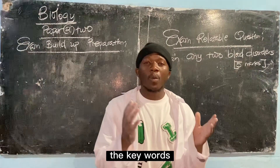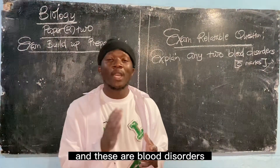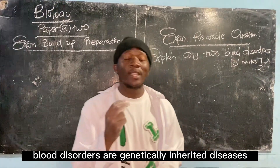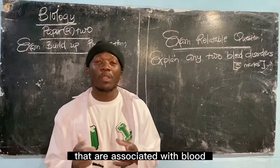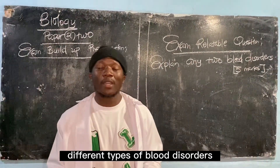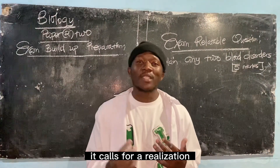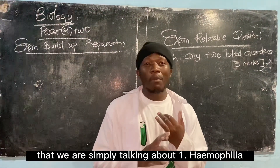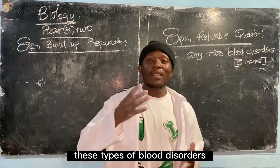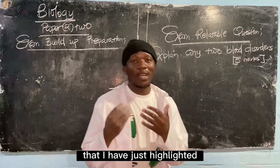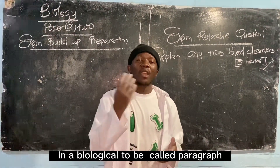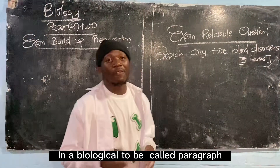Before we proceed into explaining what different types of blood disorders are, it would be relevant to understand the key words. Blood disorders are genetically inherited diseases that are associated with blood. When talking about different types of blood disorders, we are simply talking about hemophilia, leukemia, as well as sickle cell anemia.